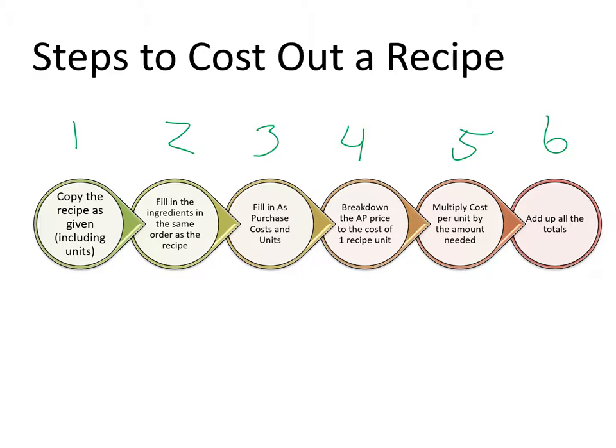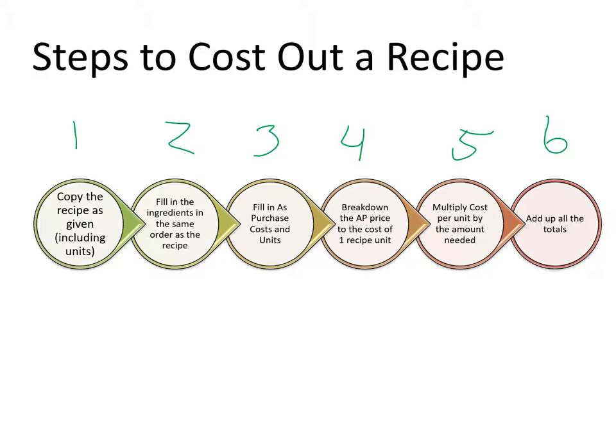Pull out the next sheet of paper with the standardized recipe on it. The top slide is step one — we copied it as given. Write 'step 1' and circle it. Before we move on, let's talk about what we've got here on our standardized recipe.